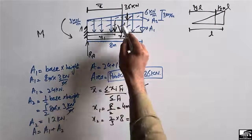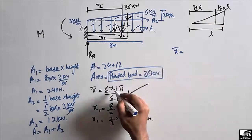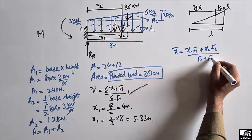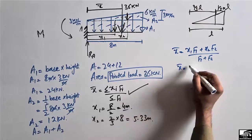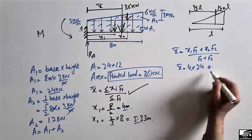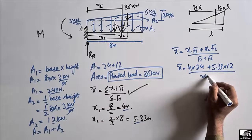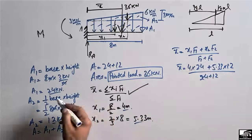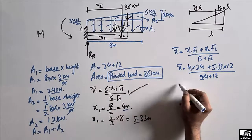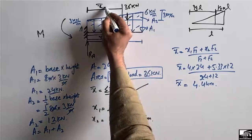Now applying the formula to find the centroid for the trapezoidal load, x-bar equals (x1 times f1 plus x2 times f2) divided by (f1 plus f2). Substituting values: x-bar equals (4 times 24 plus 5.33 times 12) divided by (24 plus 12). Solving this, we get x-bar equals 4.44 meters.